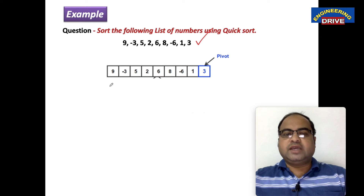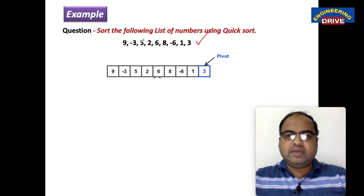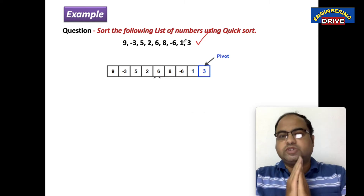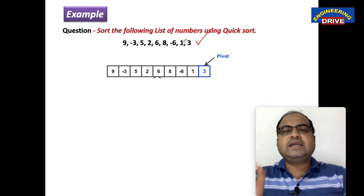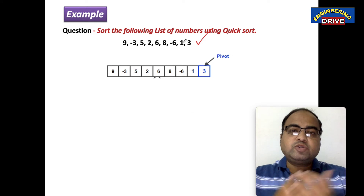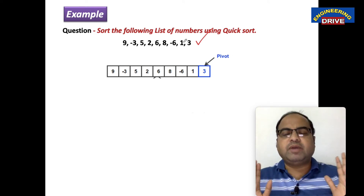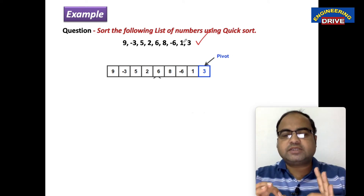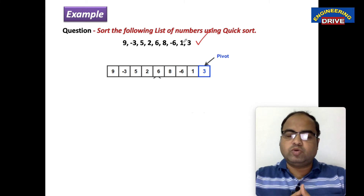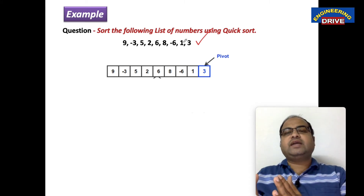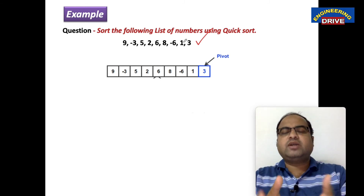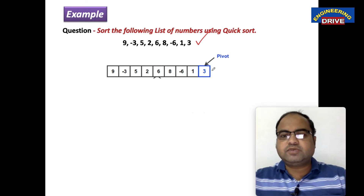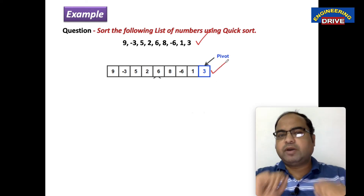First thing — I have arranged all these numbers now in the same order as given in the question. From this set of values, the first thing you need to do in quicksort is select the pivot element. Any random element you can select, but it is advised and recommended to select the last element as pivot. So I have taken the pivot element as number 3 — I have selected 3 as the pivot element.